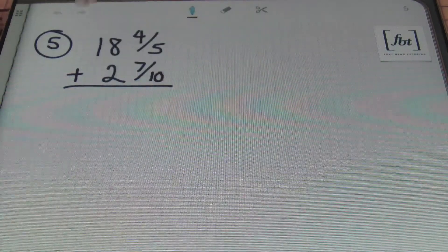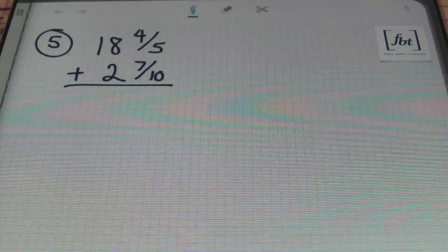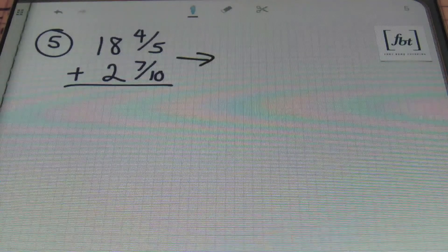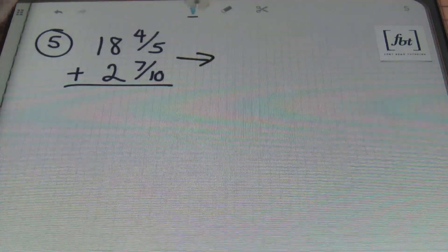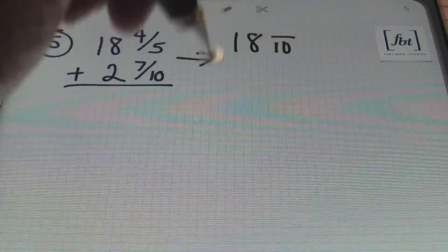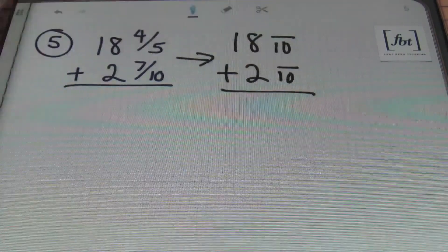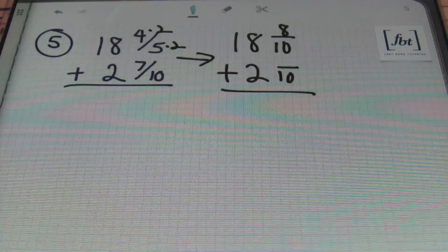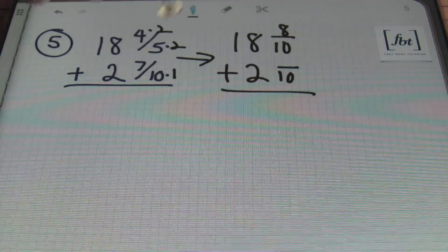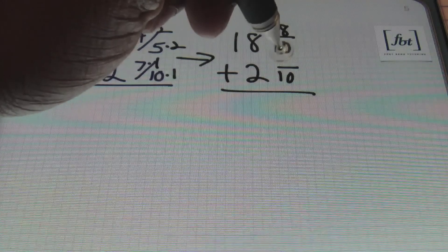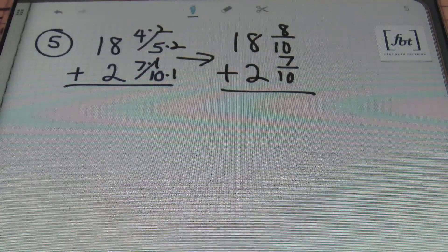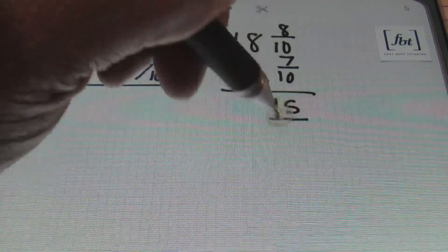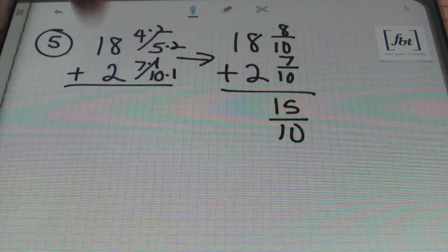In problem number 5 we have 18 and 4/5 plus 2 and 7/10. So once again I need to get a common denominator first. The first number that 5 and 10 will be able to go into evenly is 10. So I'm going to rewrite this with denominators of 10. Just like so. Alright. We had to multiply 5 two times in order to get 10. So 4 times 2 gives me a new numerator. That's 8. 10 already had the same denominator I needed. So if you wanted to you can say 10 times 1 and 7 times 1 to give you 7 here. Or you can just bring it over. Which is what I normally do. From here I'll be adding the numerators together. So 8 plus 7 is 15 over the denominator of 10. And 18 plus 2 is always 20.